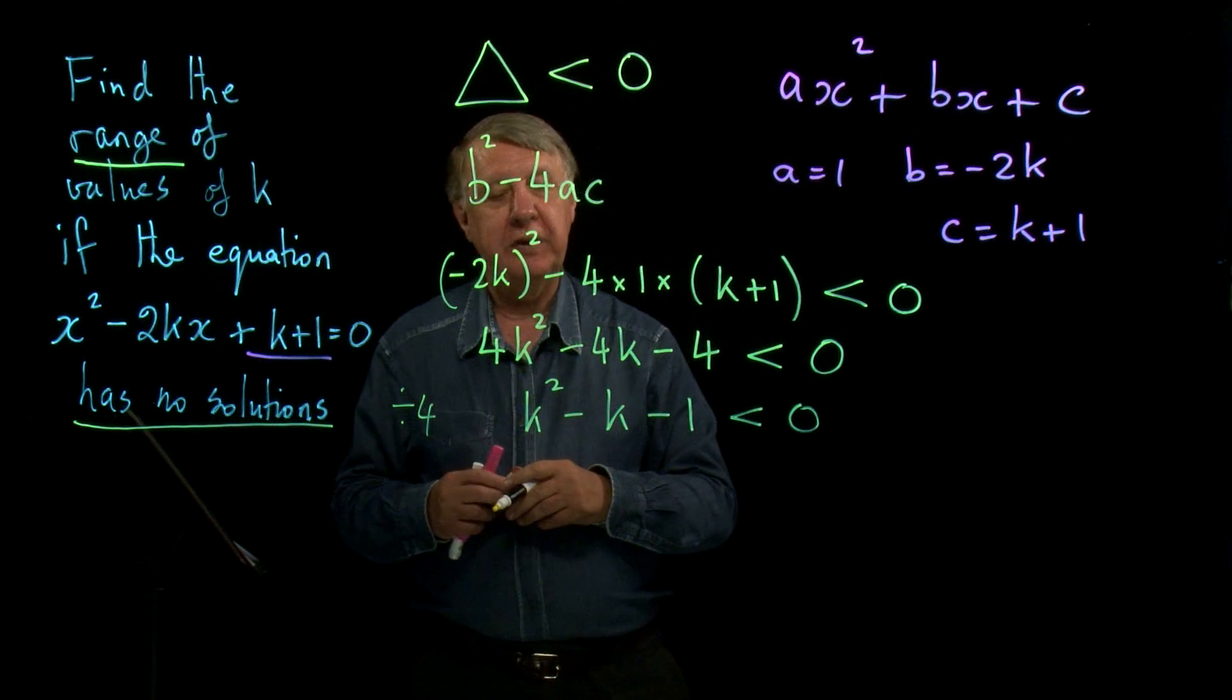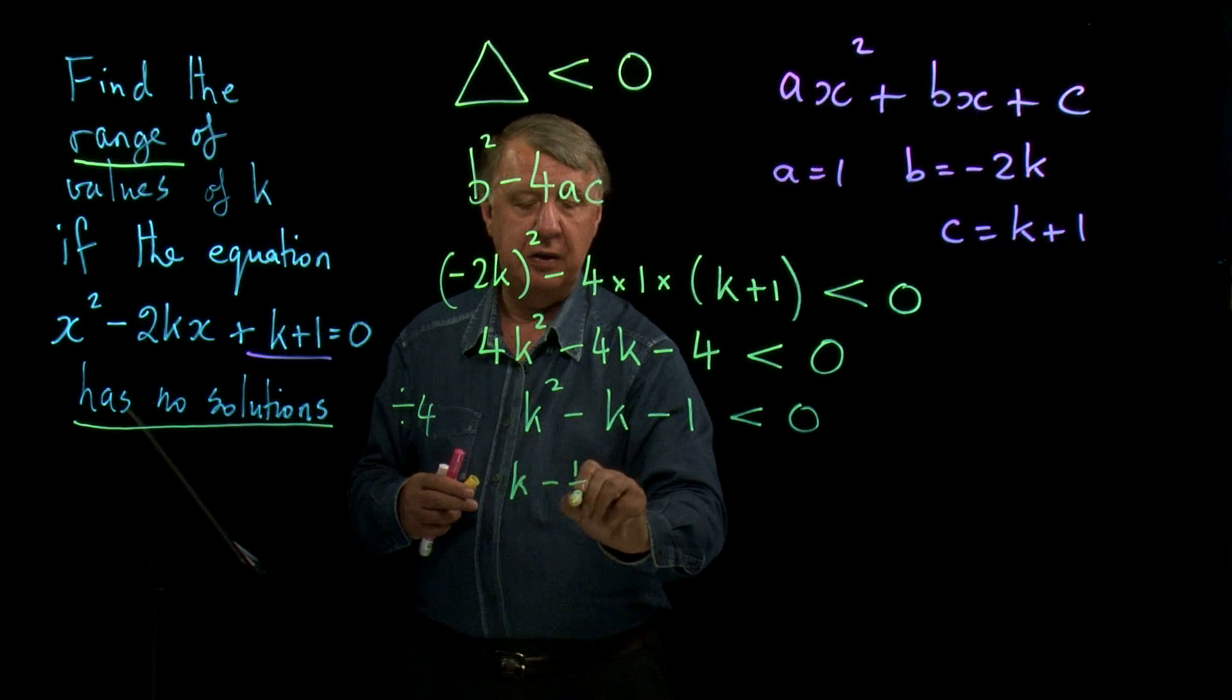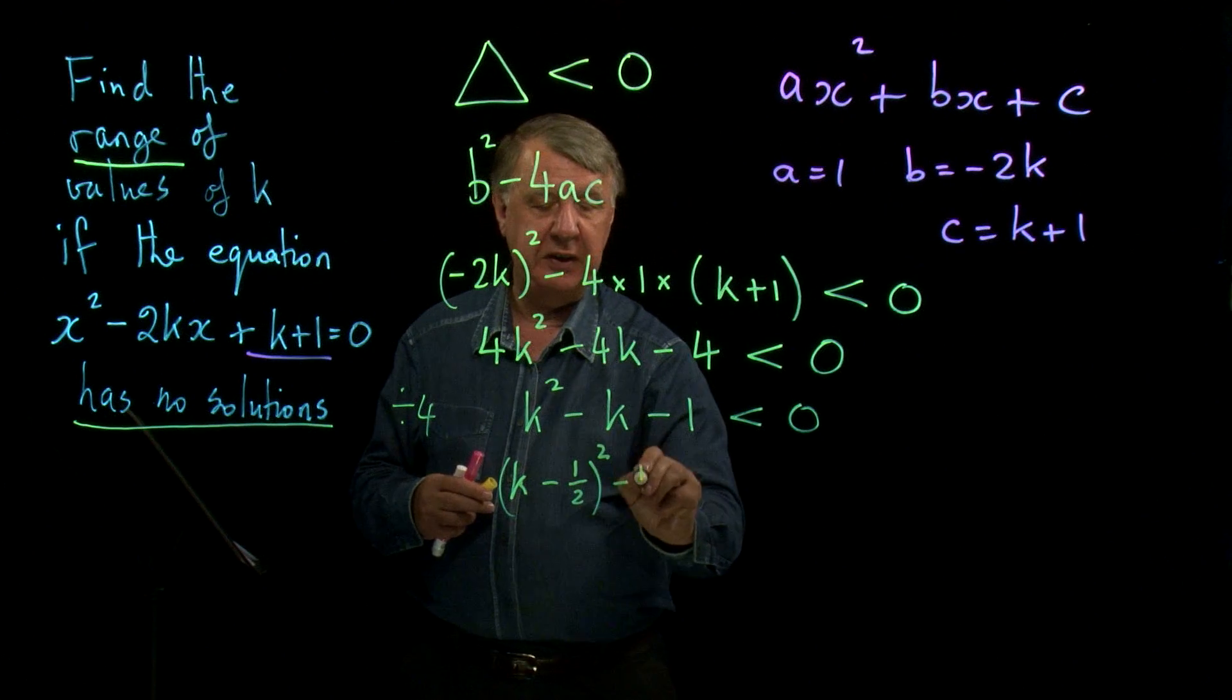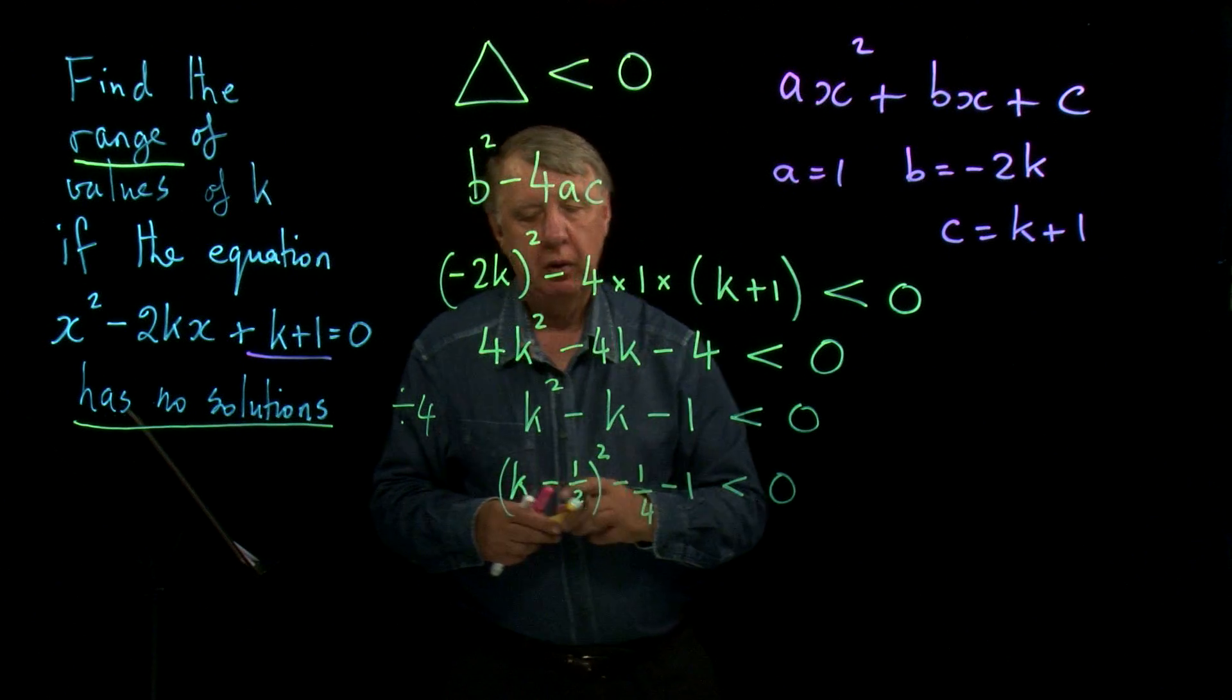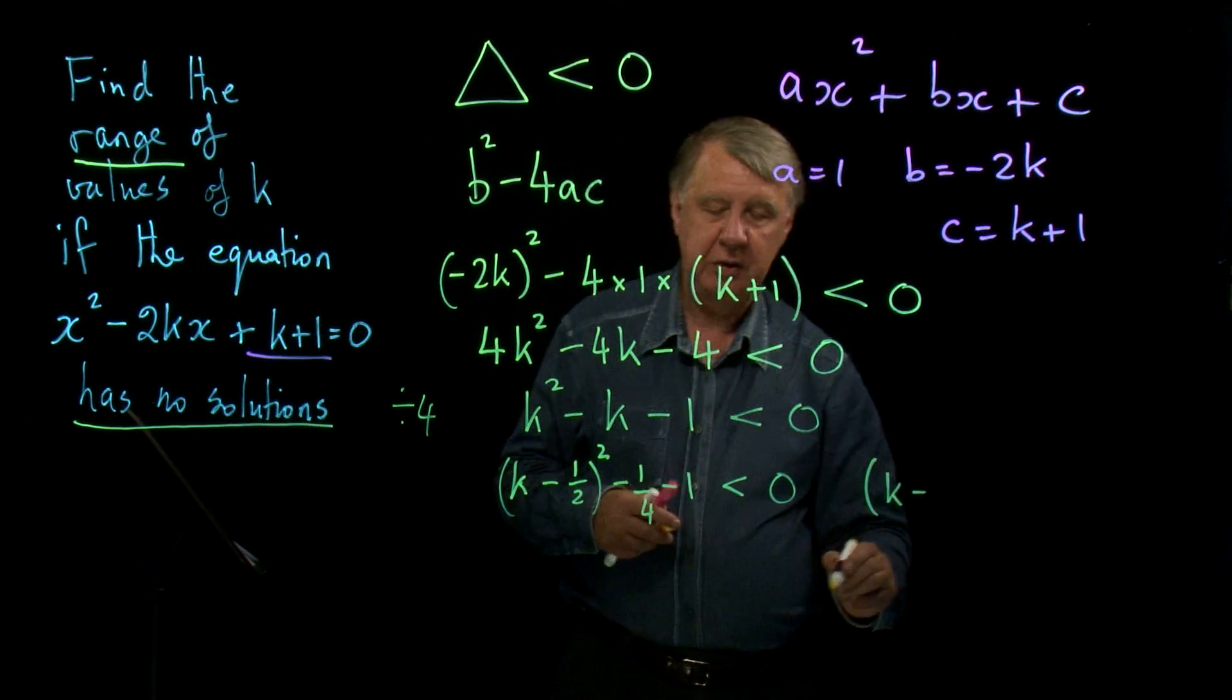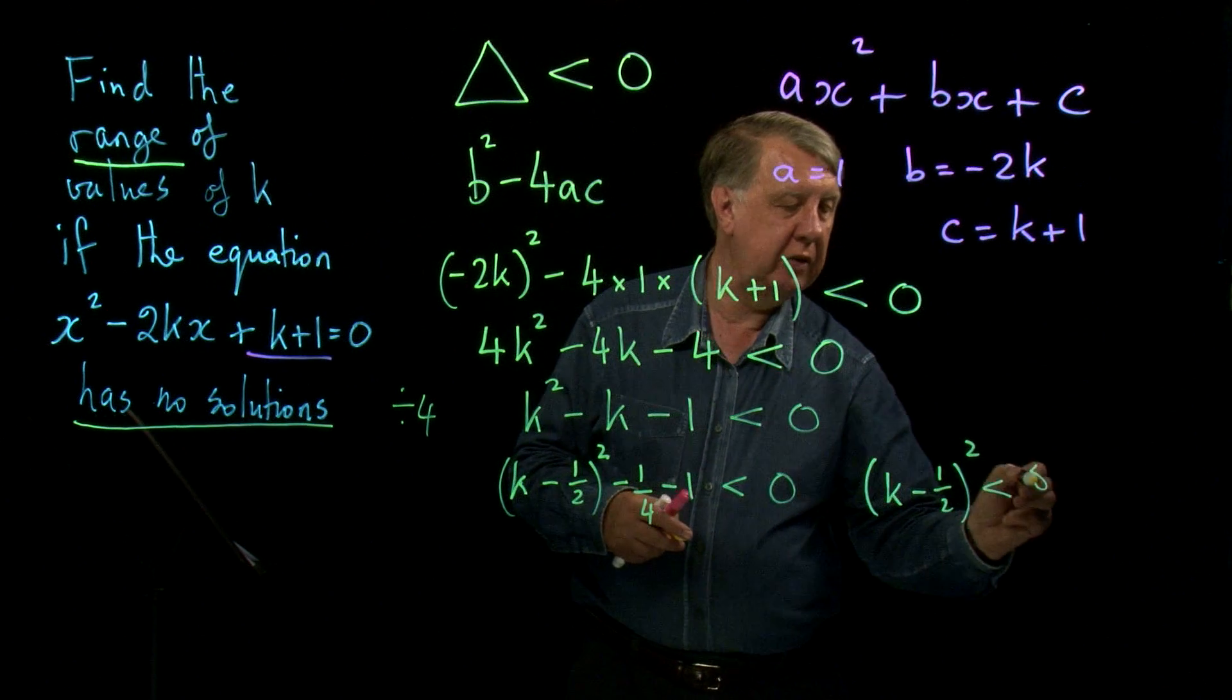So do you remember what you have to do? It's our old friend complete the square. So it's k, halve the number. Well there's really a 1 there isn't there? So it's a half. Square negative a half which is a quarter and take it away again. Let's put this on the other side. I'll write it I think on this same line. K minus a half squared is less than one and a quarter. Five over four.